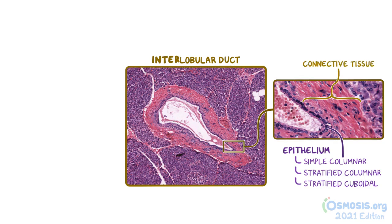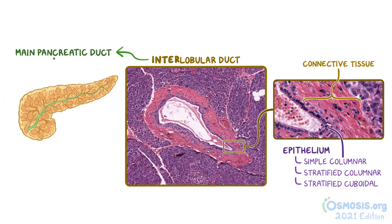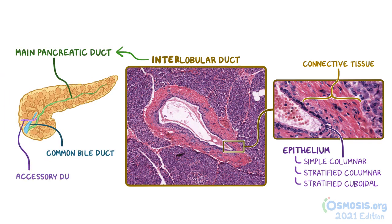The interlobular ducts eventually join with the large main pancreatic duct, which runs the length of the pancreas and leads to the common bile duct in order to drain into the duodenum. A smaller accessory duct is also often present, which also drains into the duodenum.